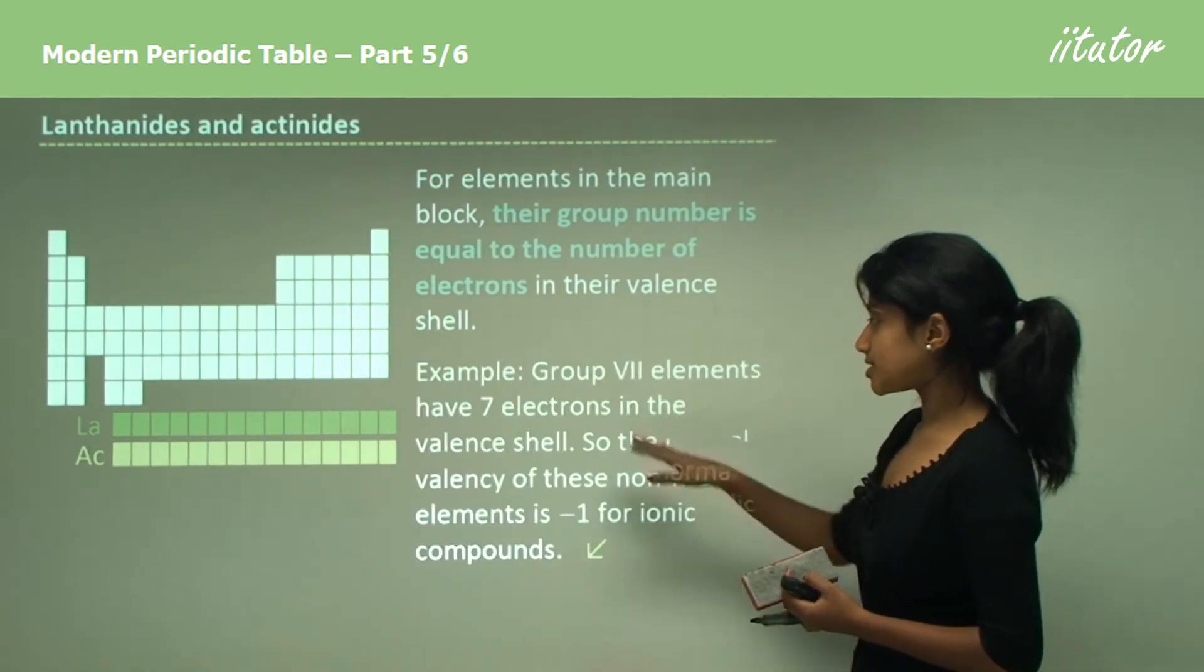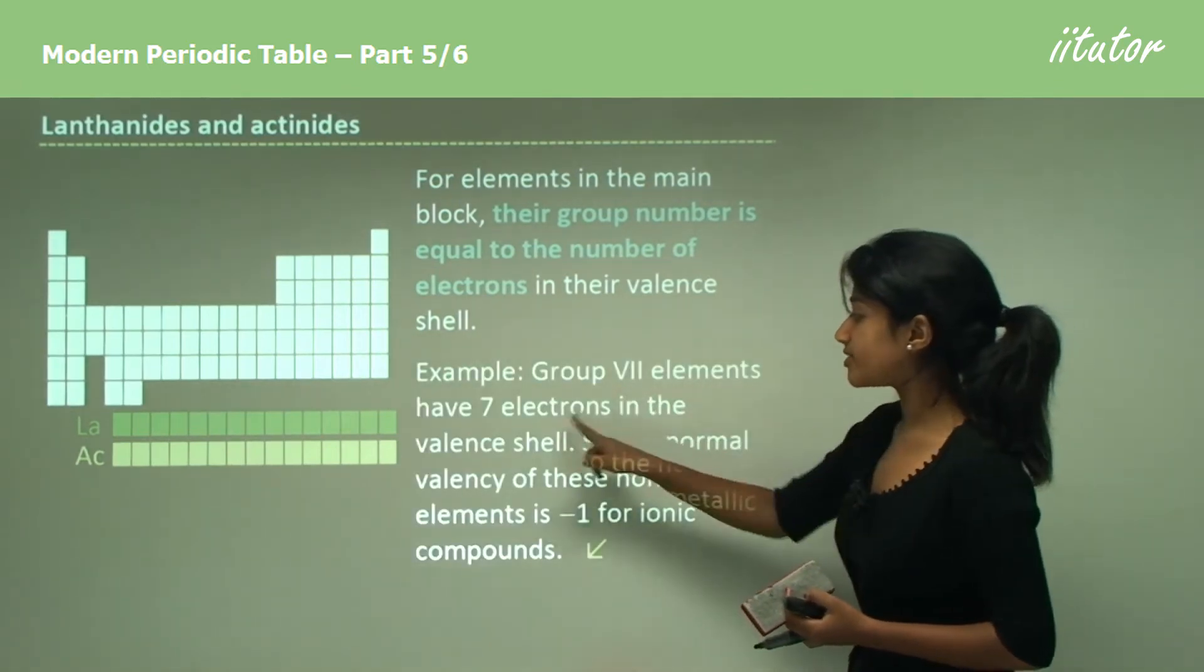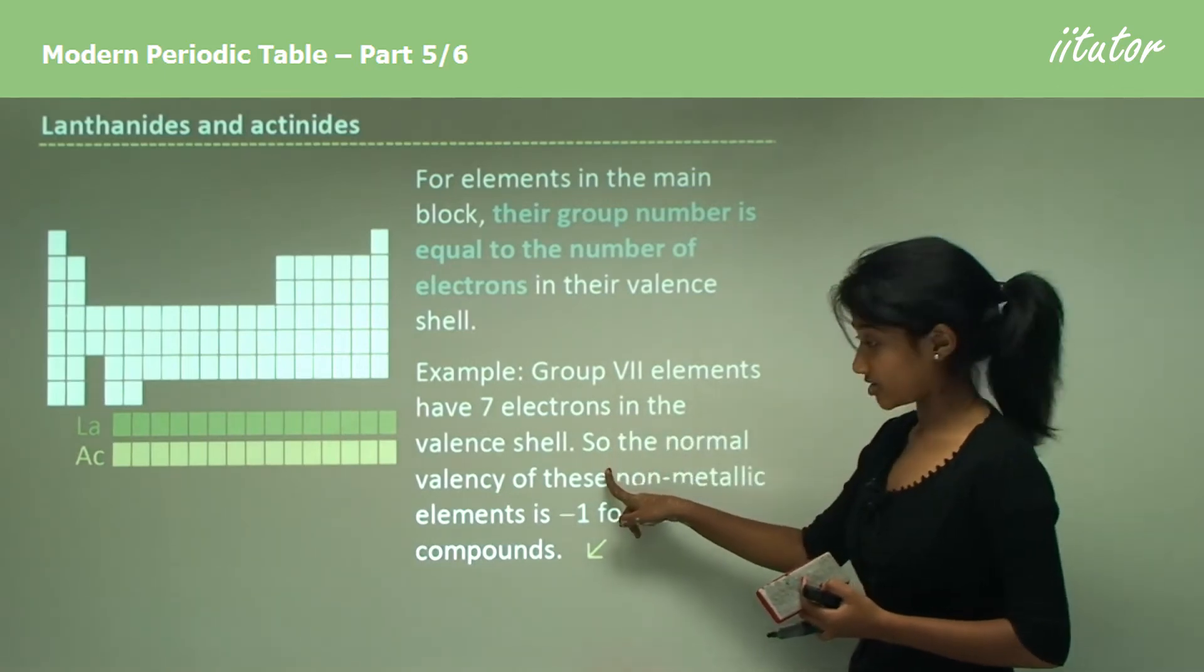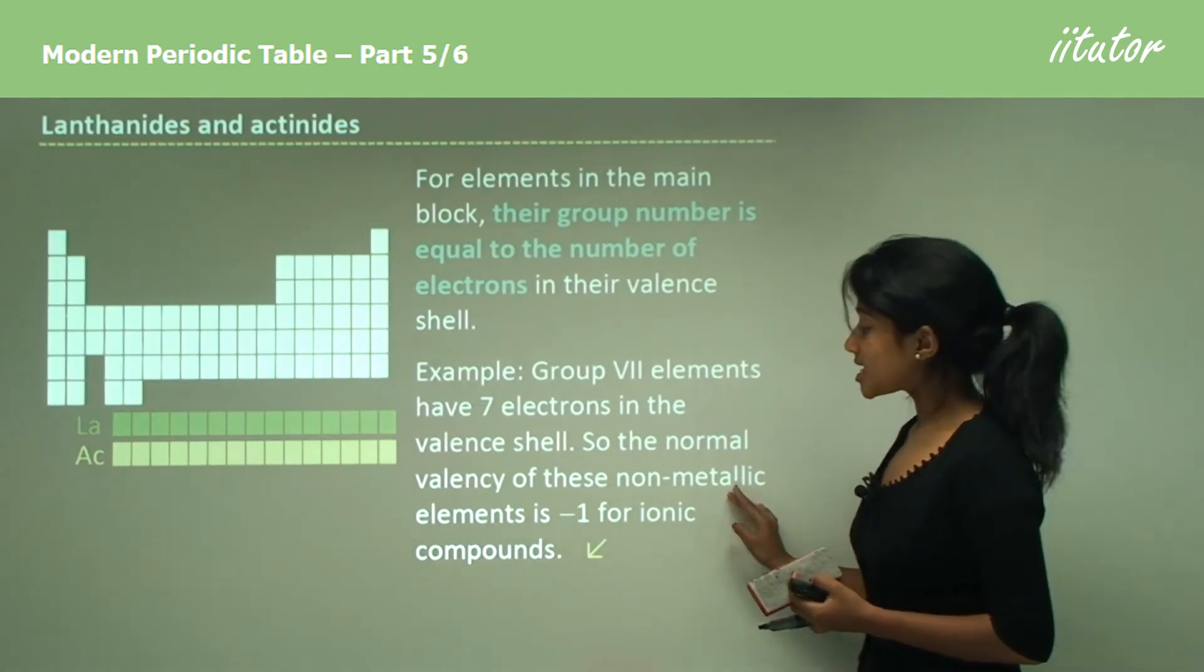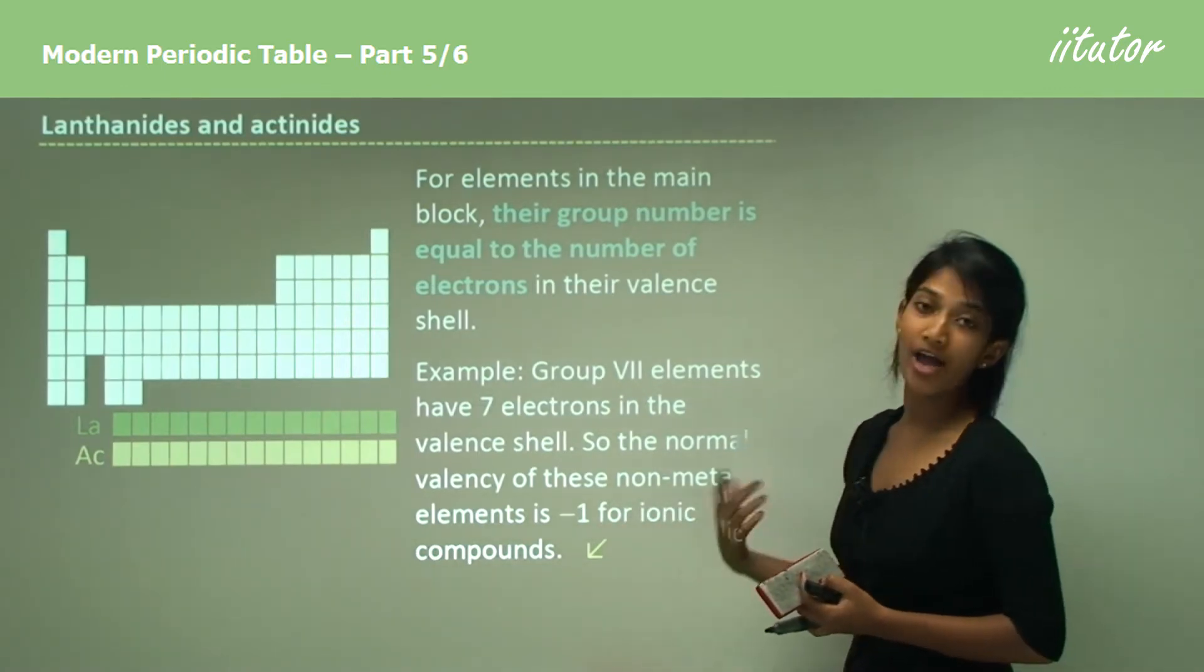Examples is that Group 7 elements have 7 electrons in the valence shell. So the normal valence of these non-metallic elements is minus 1 for ionic compounds.